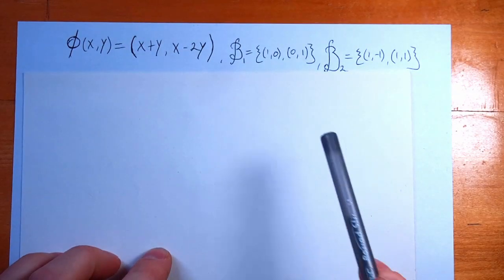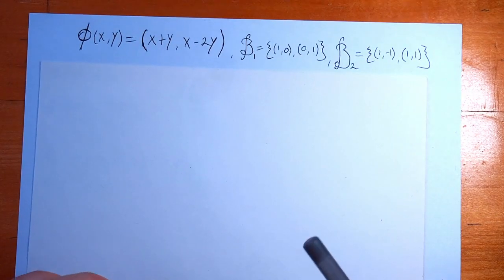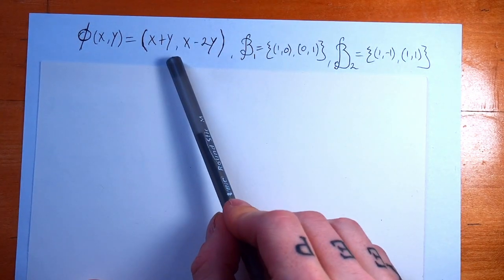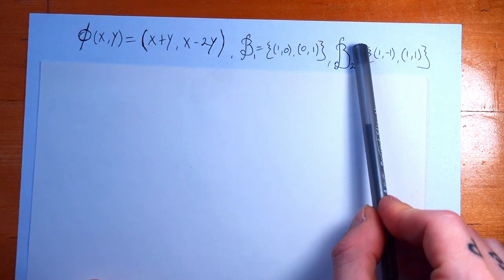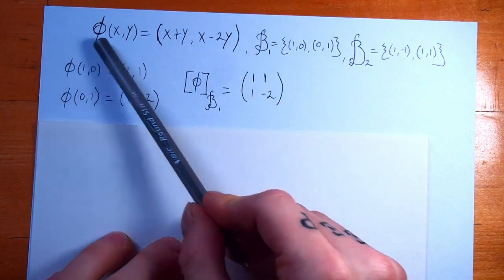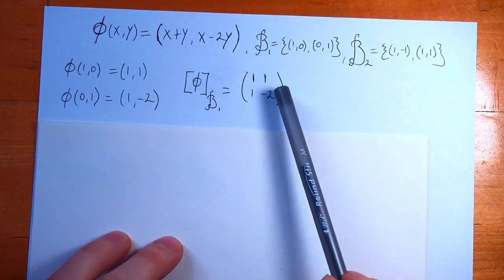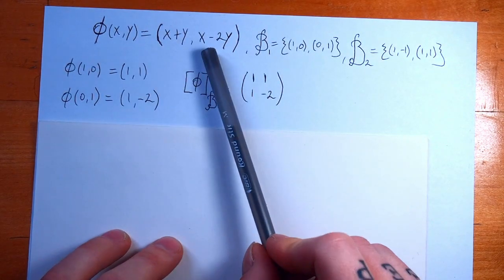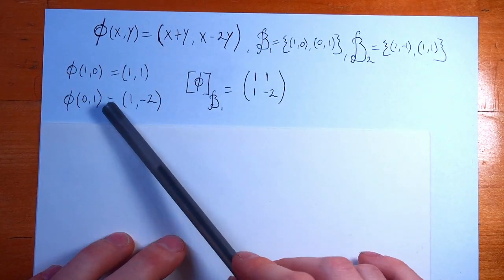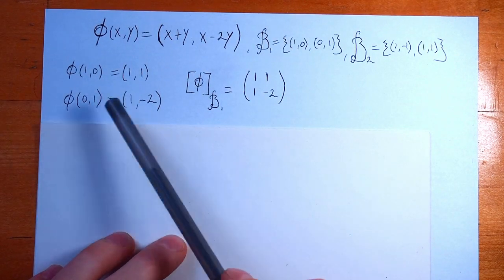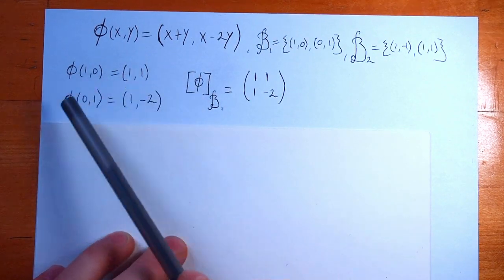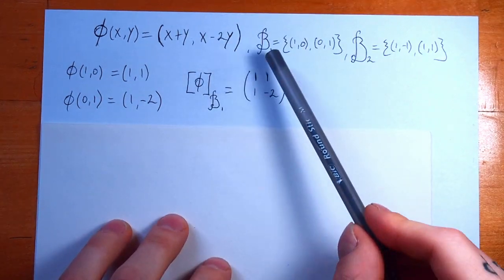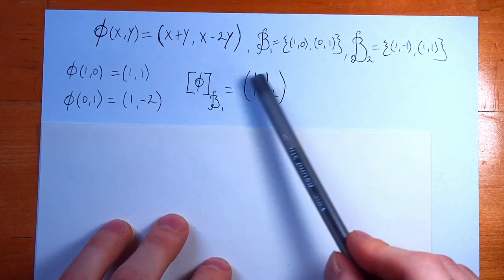OK, so here we have a linear map and we have two different bases. This map abstractly is its own object, but let's see what happens when we write it in a particular basis. When we write a linear map in a particular basis, what we end up getting is a matrix. In order to find the matrix representation of our linear map, we just need to know what it does on our basis vectors. When you plug the basis vectors in, you end up getting these vectors out, which we then write as the columns of our matrix to get the matrix representation.